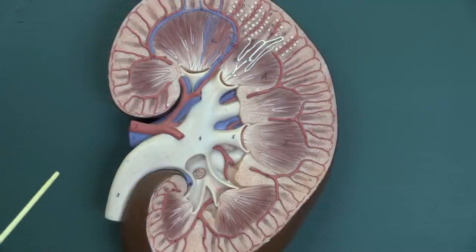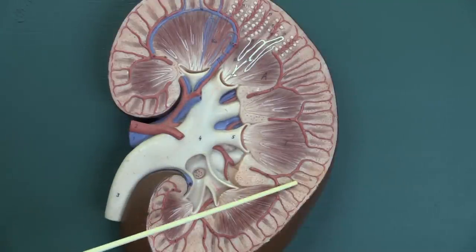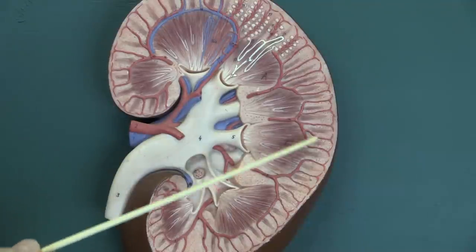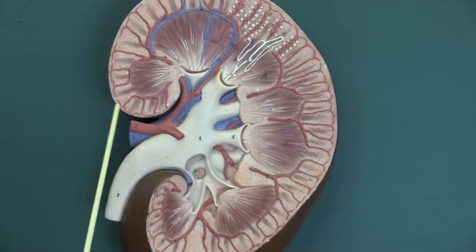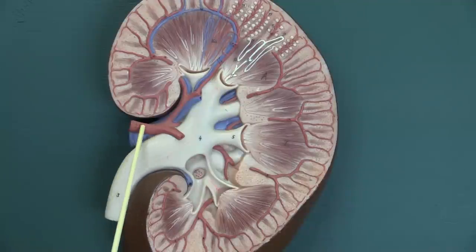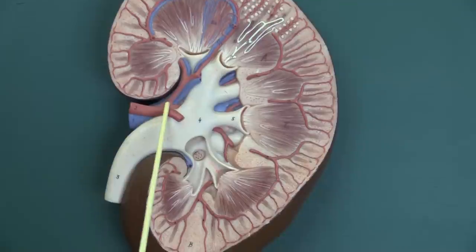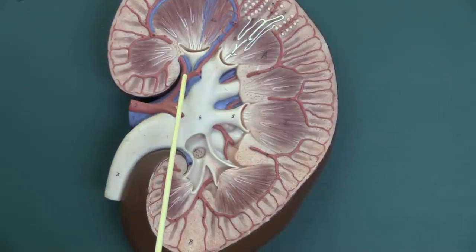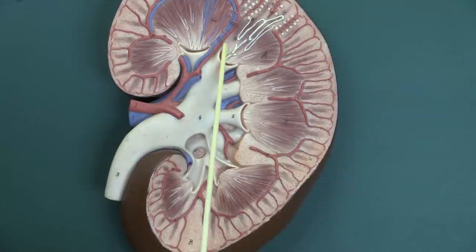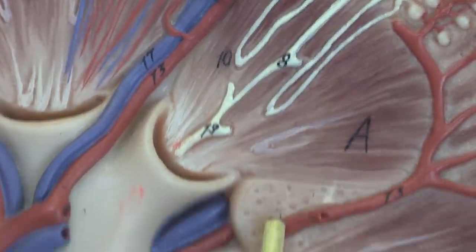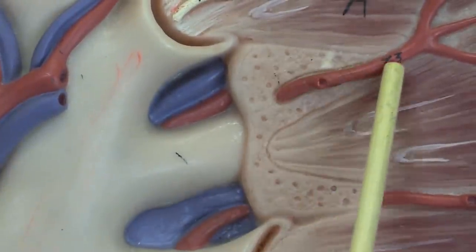Looking at the blood supply in more detail, we can see a quite exquisite patterned arterial system. Blood is derived directly from the abdominal aorta and enters via the renal artery, which divides into segmental arteries. These segmental arteries then pass through the renal columns between the lobes as interlobar arteries.